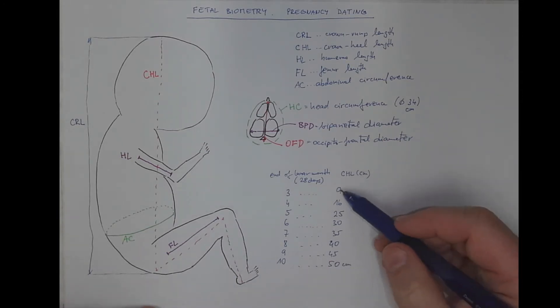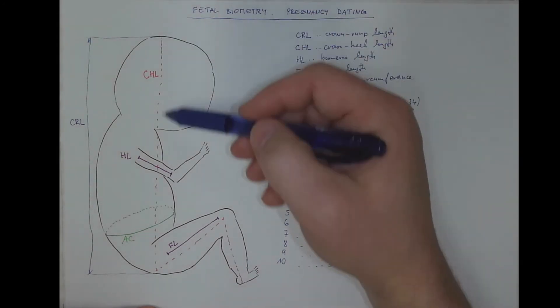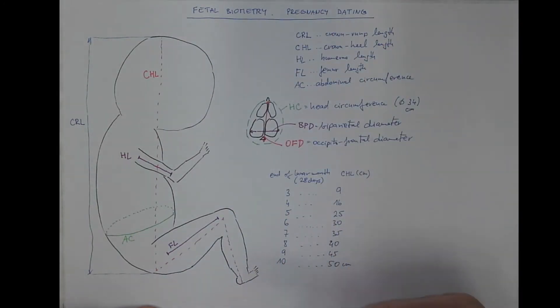Well the point here is you cannot, you can never measure precisely this crown heel length in a fetus in utero when it's still in the womb. So this is only for a rough idea what the dimensions are approximately.